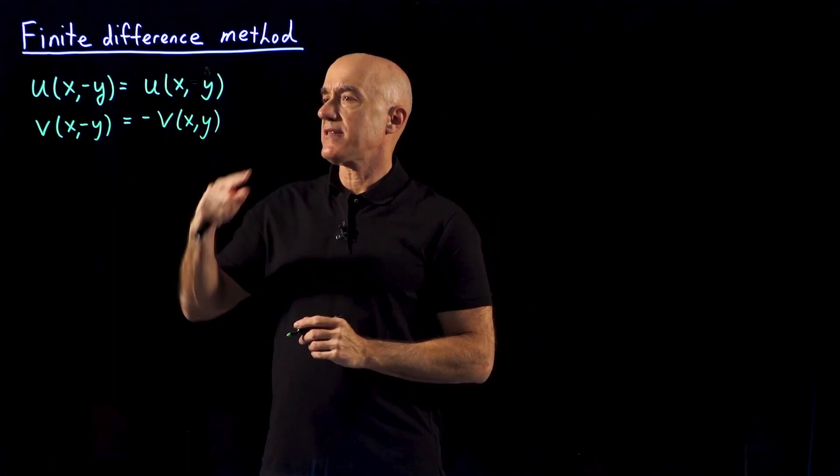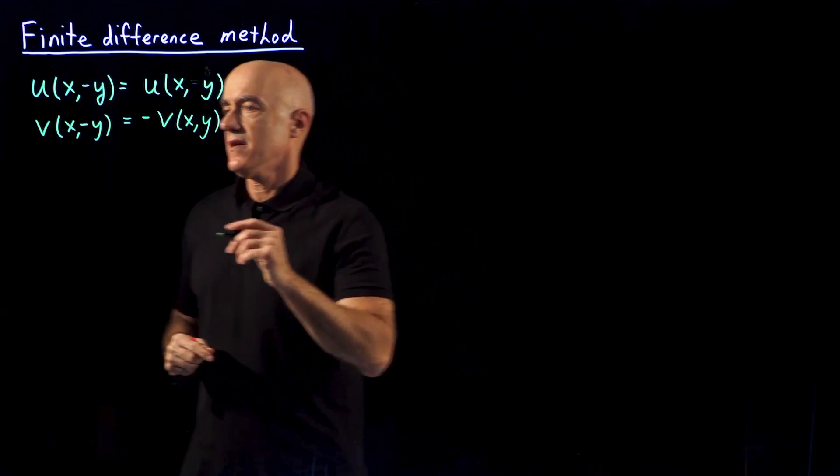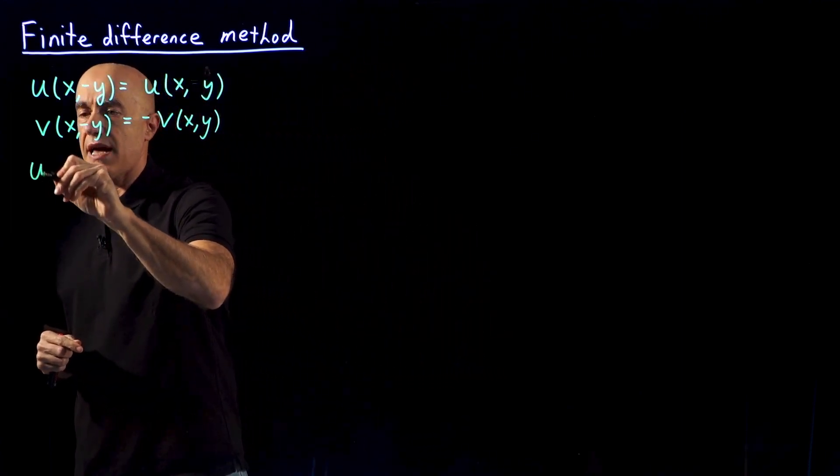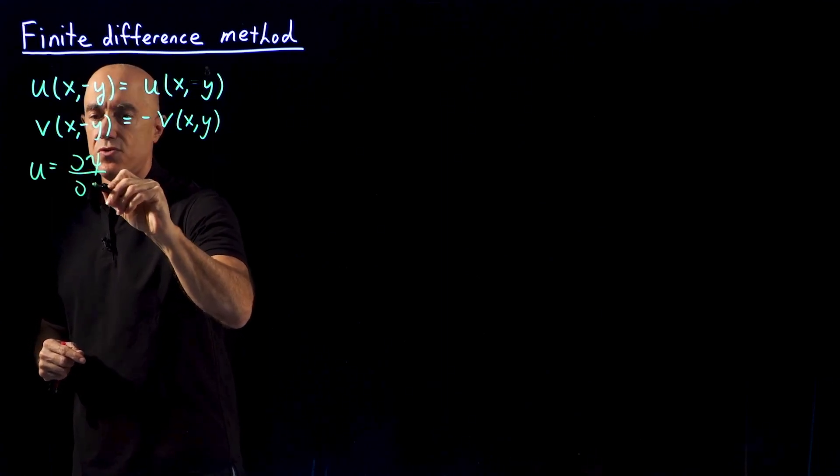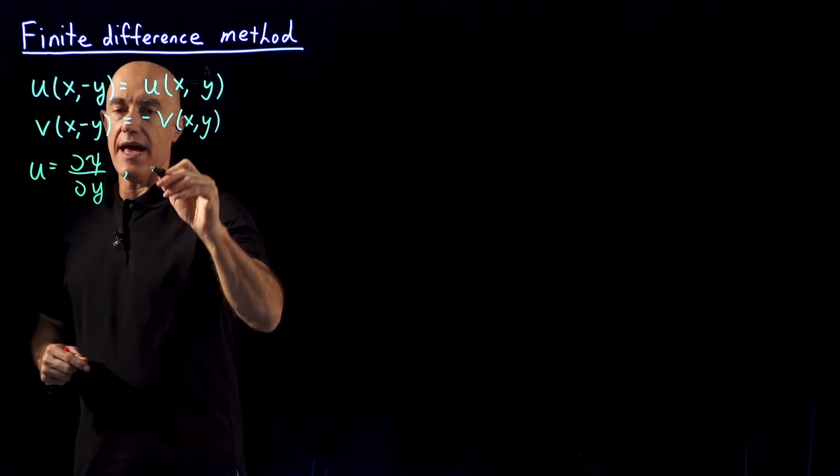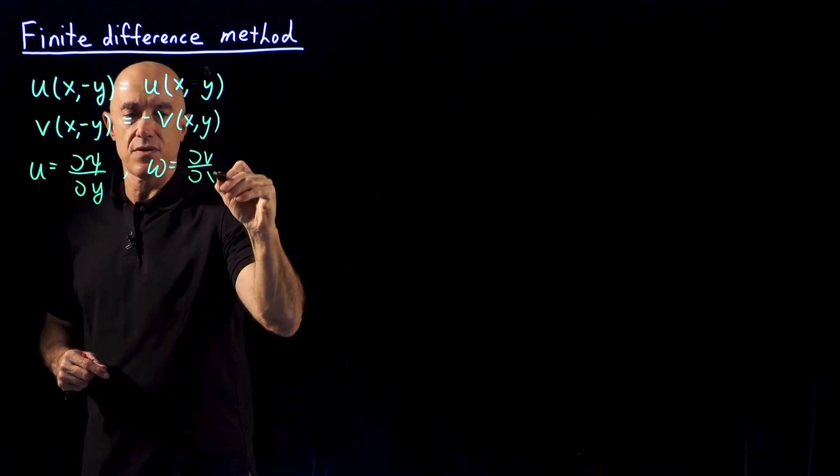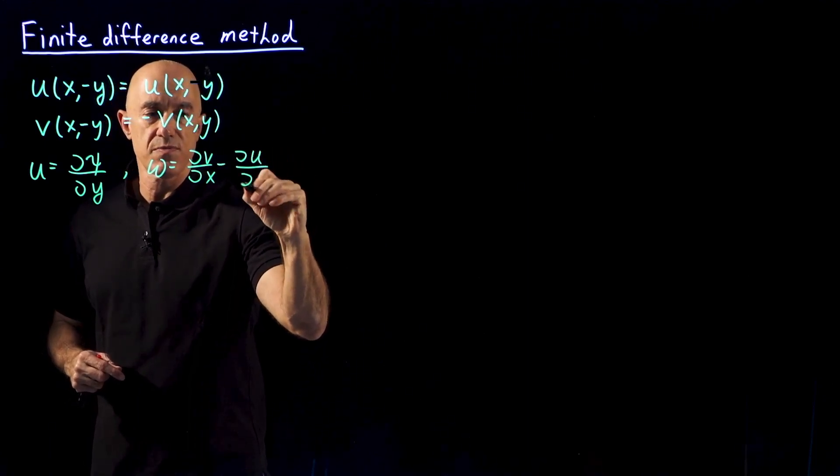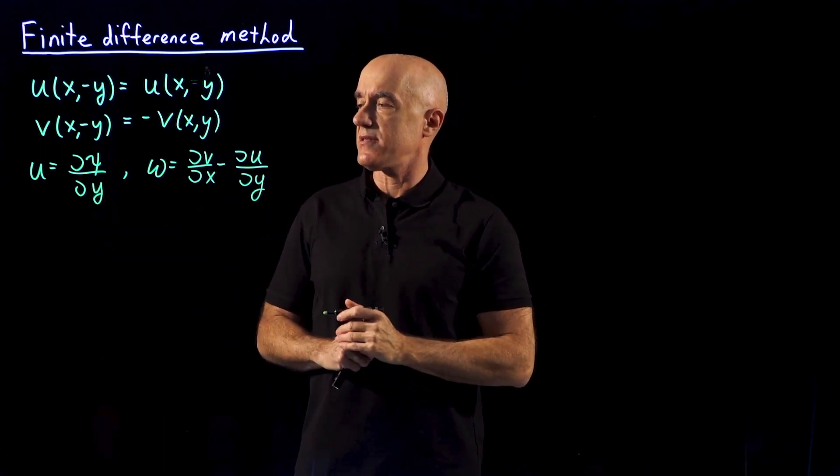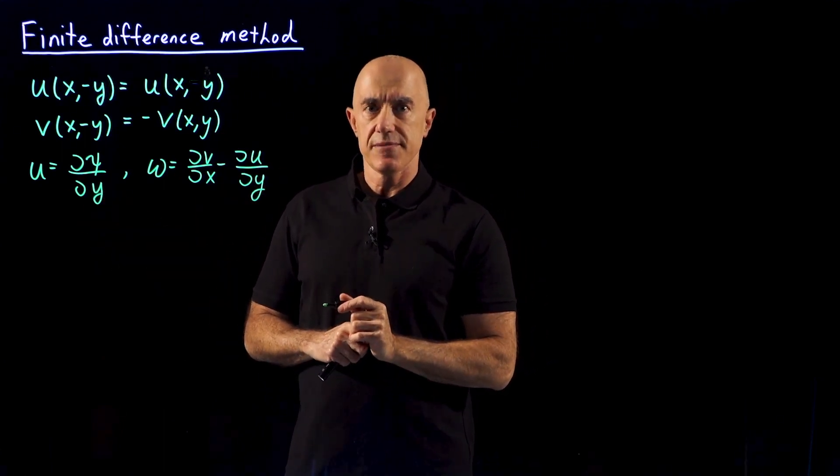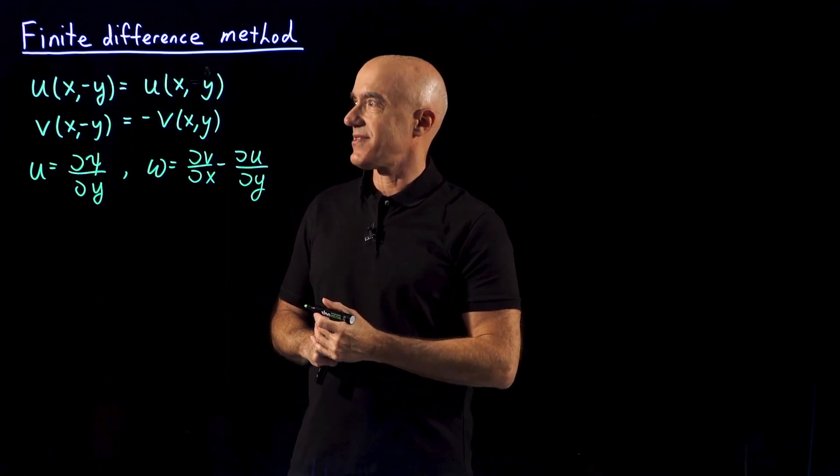We want to translate this into the stream function and the scale of vorticity. So we need to use that u equals ∂ψ/∂y, and ω equals ∂v/∂x - ∂u/∂y. These are the Cartesian coordinates definitions, which you should have done as a homework assignment.